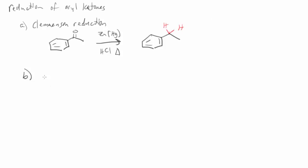There's another method for doing that called the Wolff-Kishner reduction. The Wolff-Kishner reduction does the exact same thing, except that instead of using zinc mercury amalgam and HCl, we use hydrazine, which is NH2NH2, and hydroxide and heat. And we get the exact same result where we have two hydrogens added at the place that you had your carbonyl before.